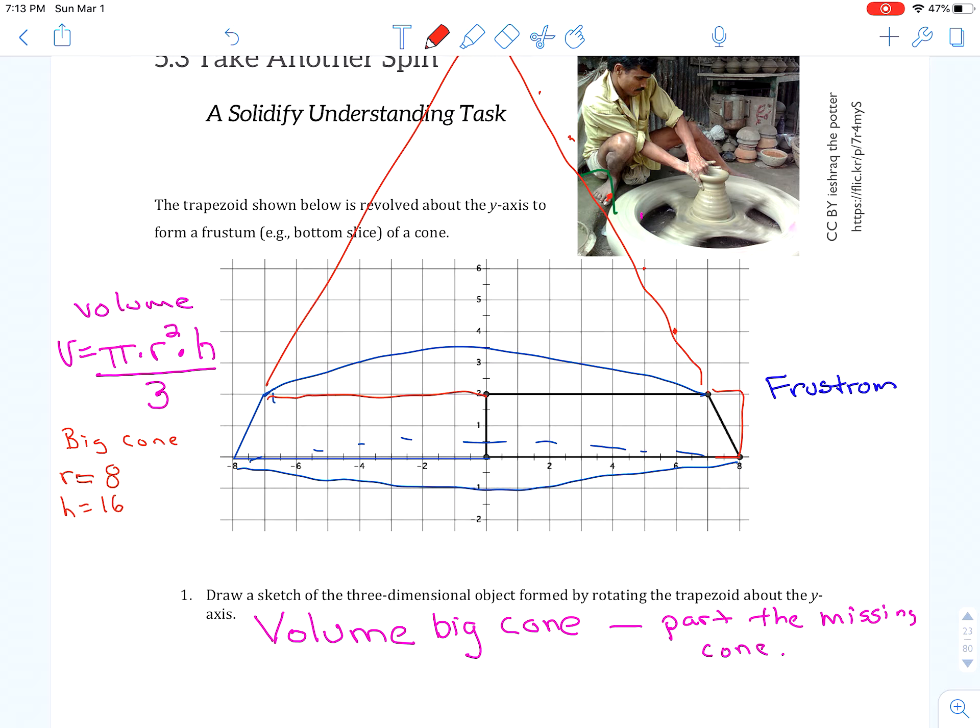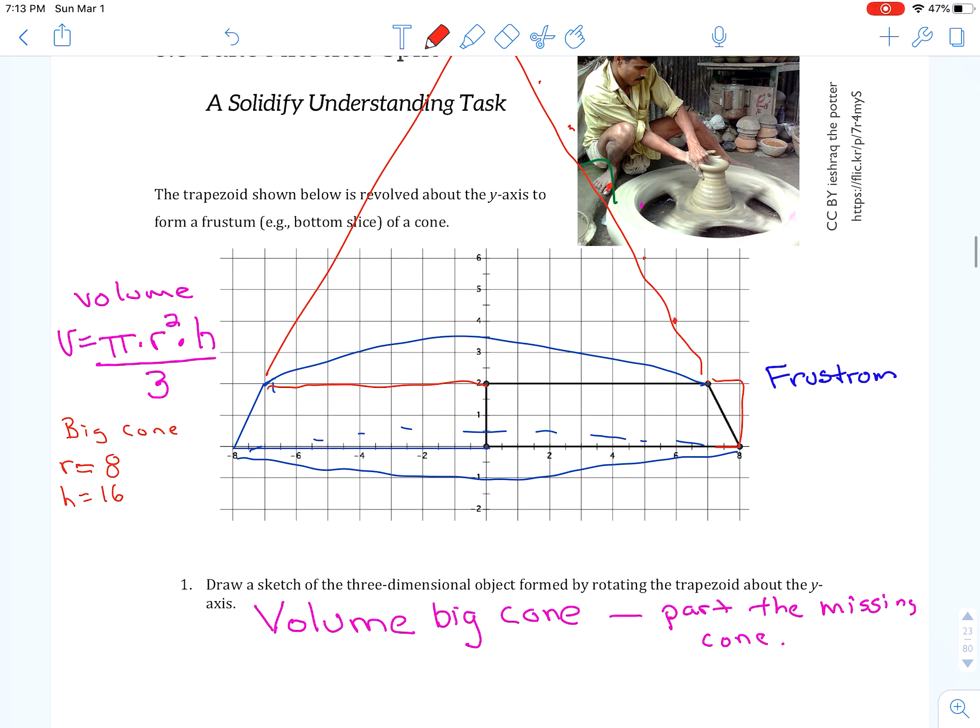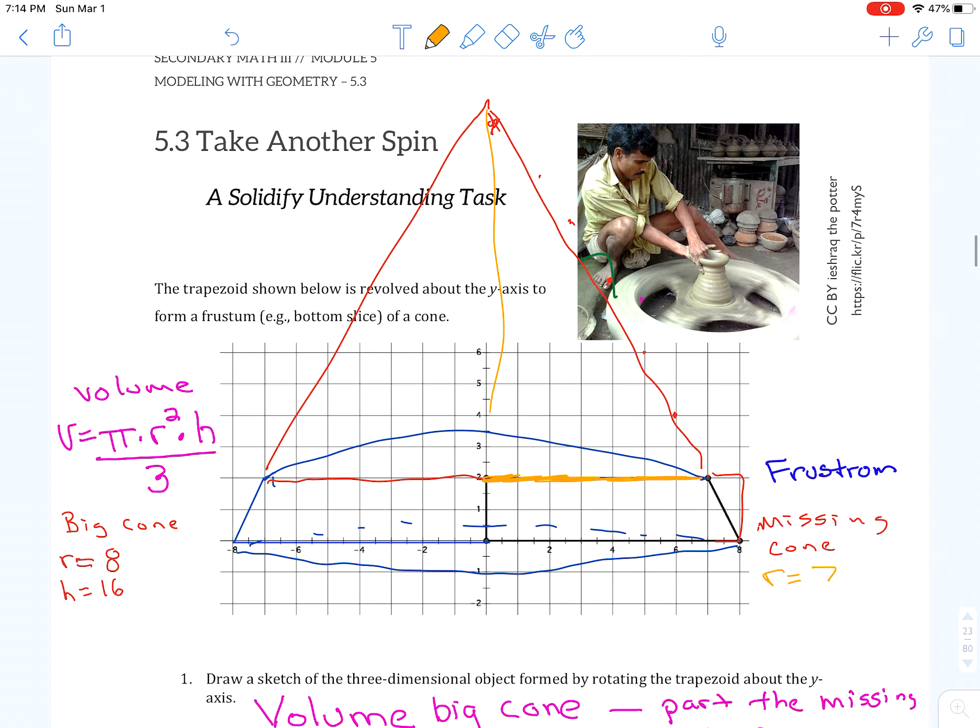And then, you also have to subtract the missing cone part. So, the missing cone. I'm going to do here. Missing cone. So, what are its dimensions? Well, it has a different radius. As you can see, this is the radius of the missing cone, which has been reduced by one to seven. And what's its height? Well, its height would be this distance here. And, remember the whole thing is 16. But now we're missing these two that are part of the frustrant. So, its height is 14.